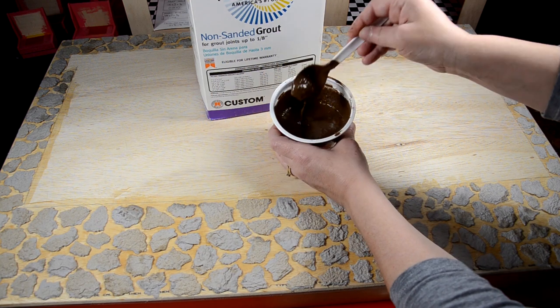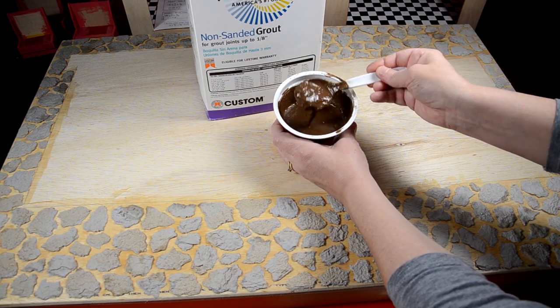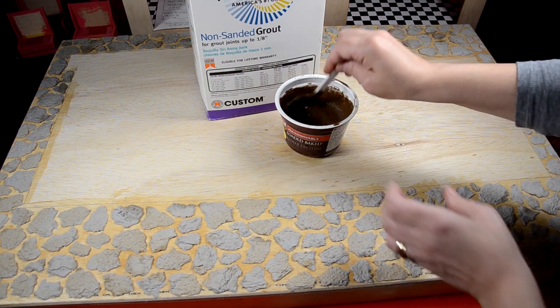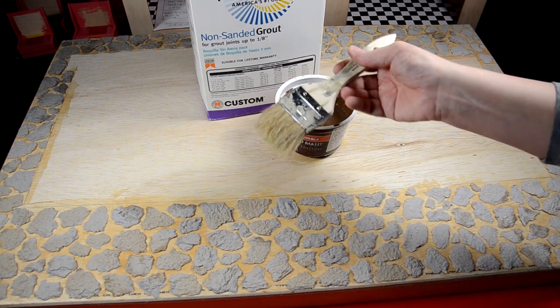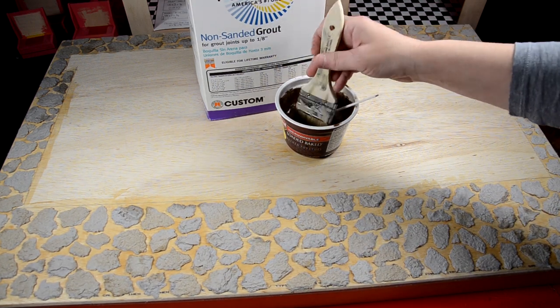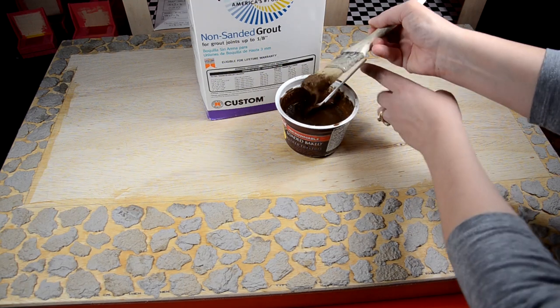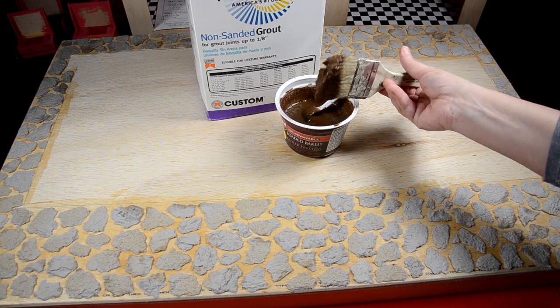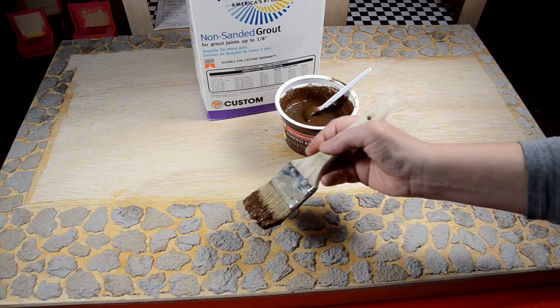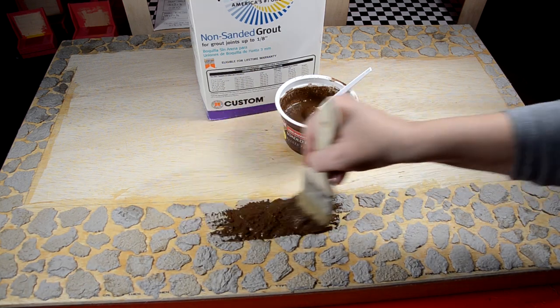Now when you get it like a soup base, that's the consistency you want. Take an old brush that you're not going to want to worry about cleaning out, I mean you can clean it out, but I don't, I just get them from the dollar store. And then you want to brush it on really thin.